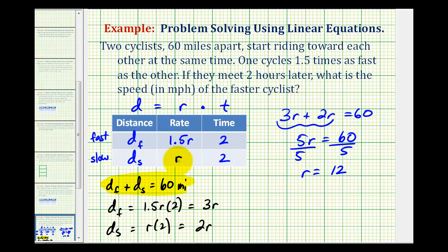Now remember, r represents the rate in miles per hour of the slower cyclist, but the question here asks for what is the speed of the faster cyclist. The rate of the faster cyclist is 1.5r, so 1.5 times 12 would be 18,